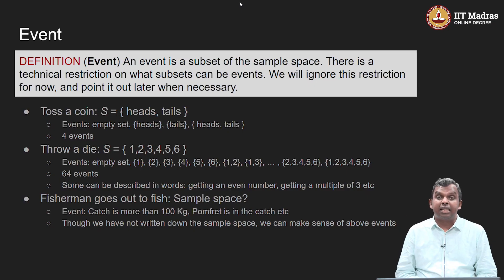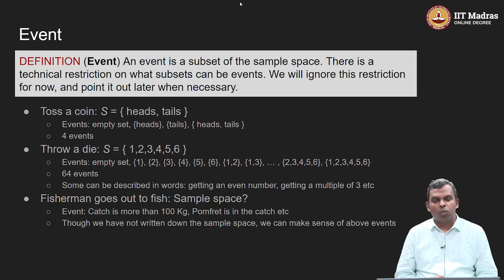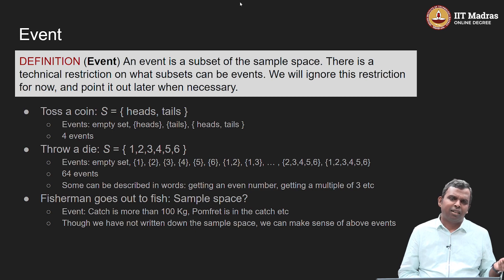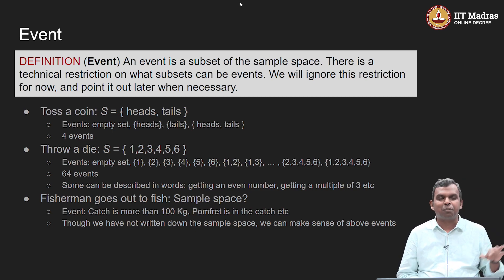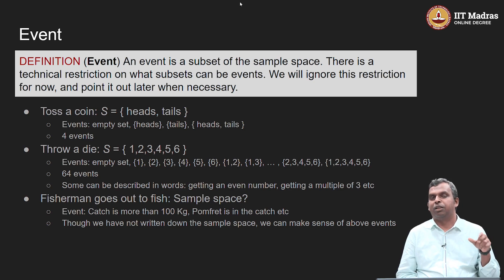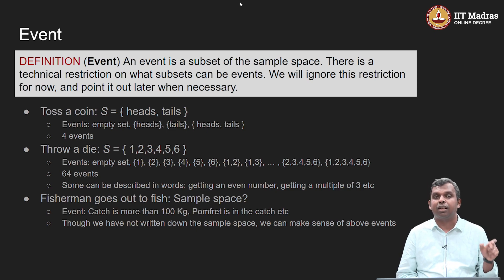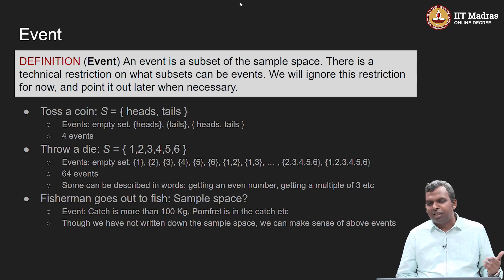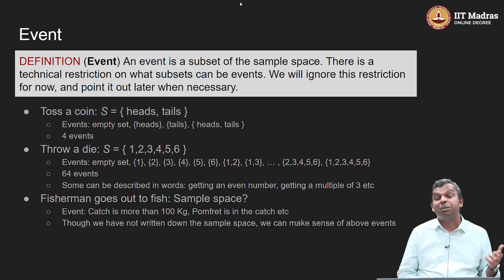We are going to now move into one of the very central objects in probability theory. We discussed experiment and outcome — those are the physical things that happen. Then we talked about sample space, which is the first mathematical object in the theory: the set of outcomes in the experiment. Even though it is an important theoretical notion, we are not going to use it that much in problem solving.